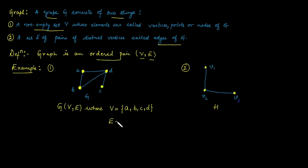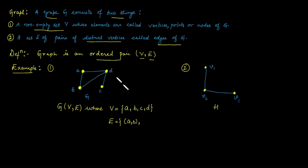The second component is the edge set, represented as a line or curve. The edge set is written as distinct pairs of vertices. For graph G, the first edge is between vertex A and B, written as (A, B). The second edge is (A, D). The next edge is (B, D), and the last is (C, D). So this is the edge set for graph G.